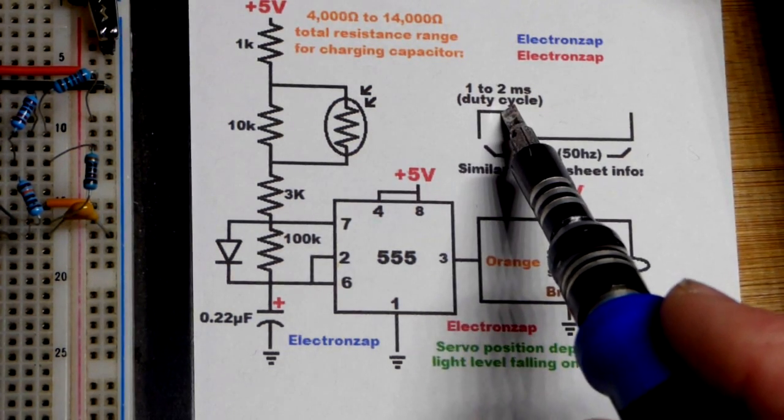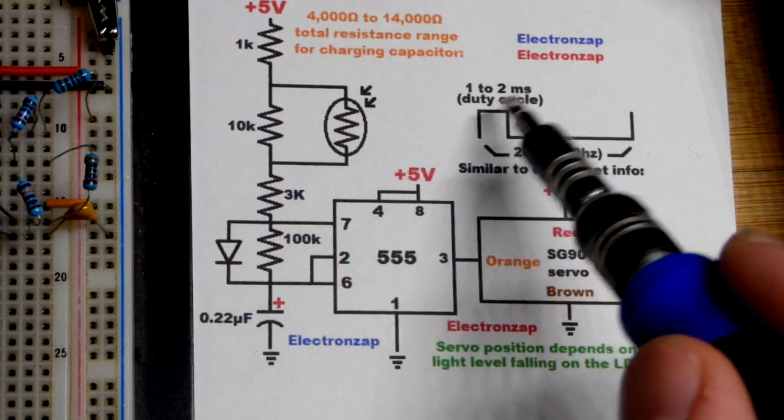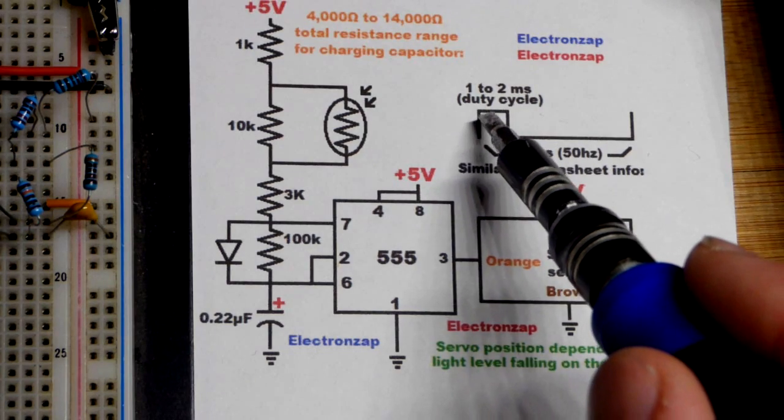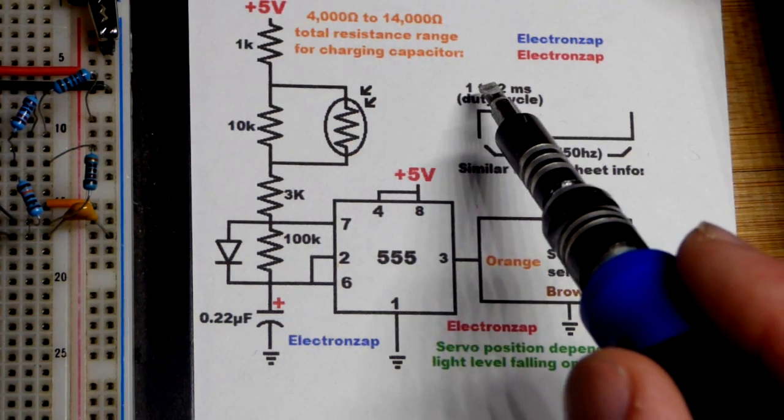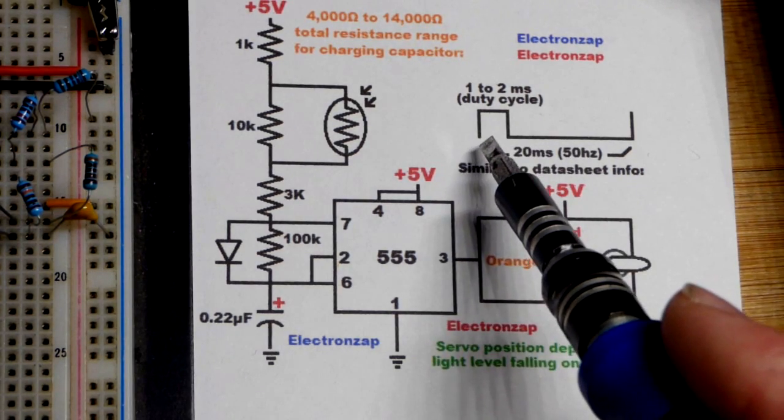During that period of time it's how long the output here is high, so close to five volts in this case. It should be somewhere between about one to two milliseconds for how long it is high out of a total of 20 milliseconds.